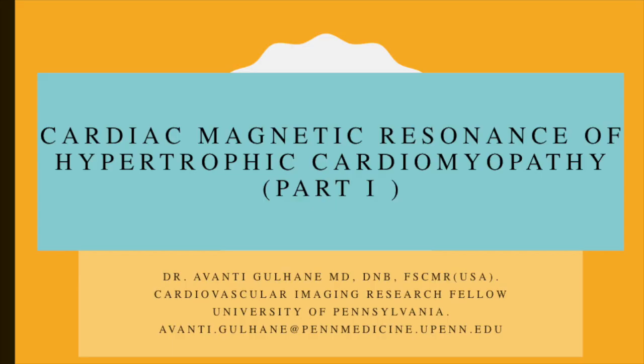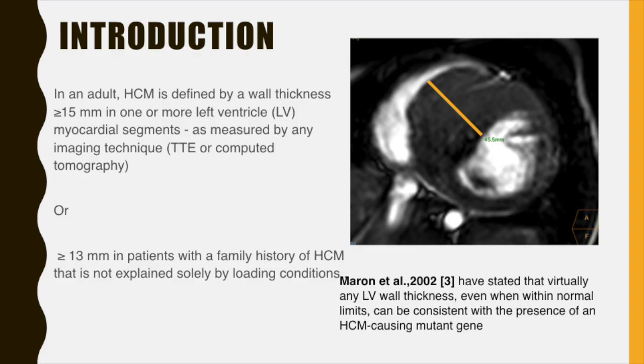The term hypertrophic cardiomyopathy implies an autosomal dominant genetic disease caused by mutations in the cardiac sarcomere protein genes. These patients have a higher prevalence of family history of HCM and sudden cardiac death. Hence, imaging is imperative in this condition and in an adult, HCM is defined by a wall thickness more than 15 mm in one or more left ventricle myocardial segments as measured by any imaging technique, or more than 13 mm in patients with a family history of hypertrophic cardiomyopathy that is not explained solely by loading conditions.